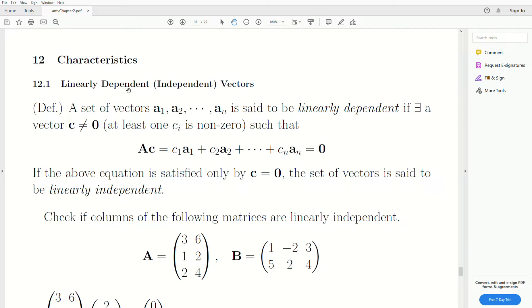Let me jump to our current topic here, and it's linearly dependent and independent vectors. So we have a set of vectors A1, A2 through An, and they're said to be linearly dependent if there exists a vector C that's not zero such that this matrix product is zero.